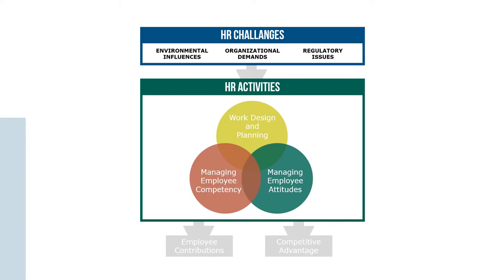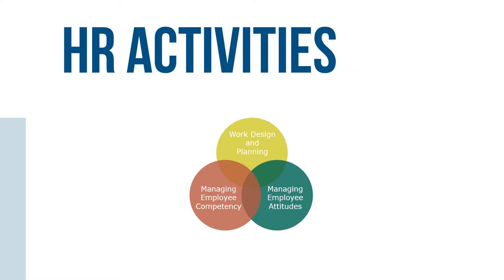This figure shows that the strategic management of employees centers around three categories of HR activities, which occur within the context of three main HR challenges. The three primary HR activities are: first, work design and workforce planning, which is about designing jobs and planning for the workforce needed to achieve organizational goals; second, managing employee competencies, which includes identifying, acquiring, and developing employee talent and skills; and third, managing employee attitudes and behaviors, which means encouraging and motivating employees to perform in appropriate ways to contribute to company goals.